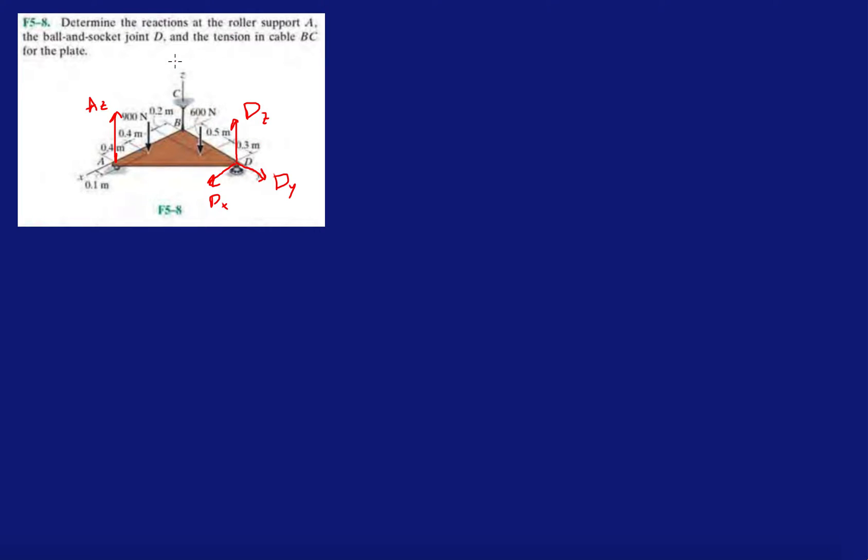And then we have tension cable BC, so we have this force BC which we'll call TC. Now, at this point you're ready to start doing static equilibrium equations because you've drawn out all the forces acting on that triangular plate.